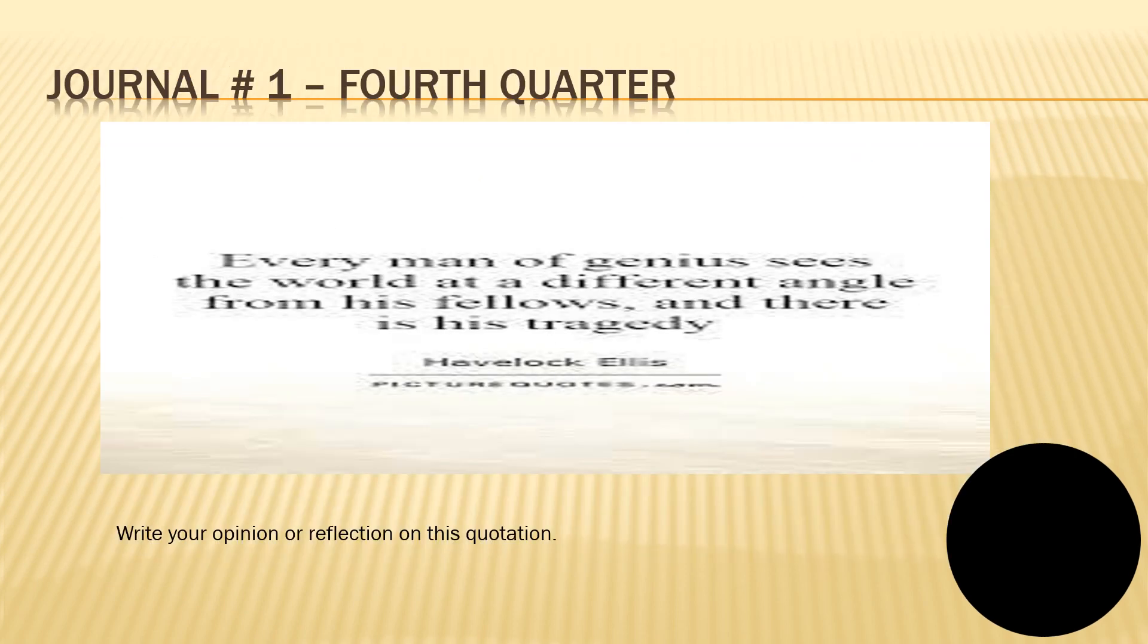Now, so, for our first journal for the first quarter. So, please write your opinion or reflection on this quotation: Every man of genius sees the world at a different angle from his fellows and there is his tragedy. So, whatever your opinion you get here. So, what does it mean? Every man, all of us, it means is a genius. Now, if we are going just to see the world with different perspectives and different angles. Now, we can see that everything is positive and all creatures of God are good. But it depends on how are you going to perceive on your own.